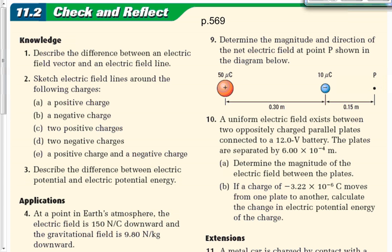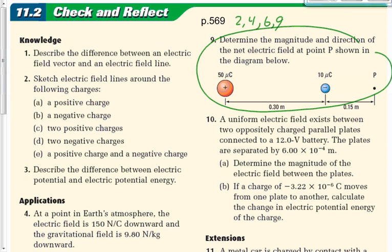We also had some questions to do on page 569, numbers 2, 4, 6, and 9. Any issues with any of those four questions? Question 9 is the same as what we just did — three charges — except a little bit easier. Be careful with these. Number 4 — that's 10 to the minus 6.